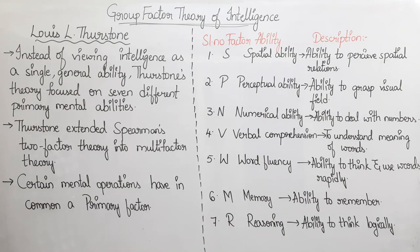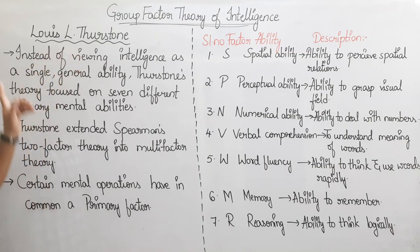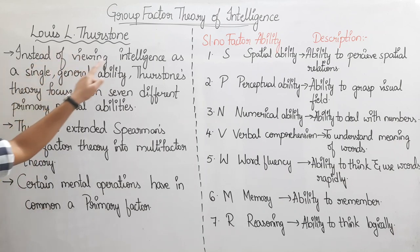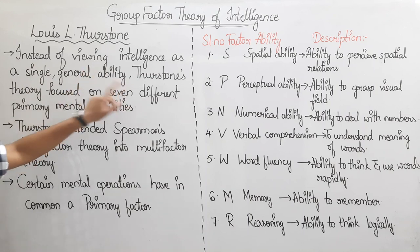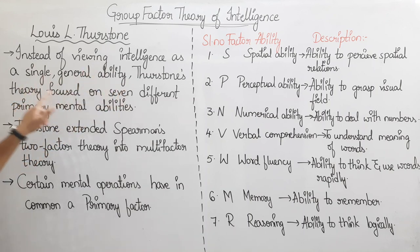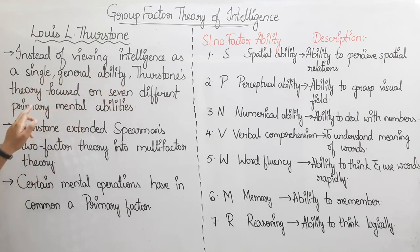So let's start talking about Group Factor Theory of Intelligence. This Group Factor Theory of Intelligence is by Louis L. Thurston. Instead of viewing intelligence as a single general ability, Thurston's theory focused on 7 different primary mental abilities.